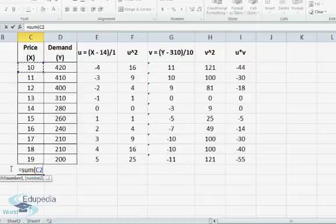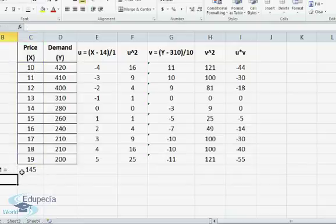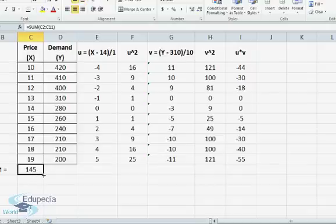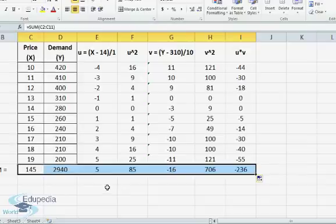u multiplied by v would be this multiplied by this group, and then for the whole column we have here. Yeah, so you have uv square. Next I need to find the sums of all of these, so let me do that here. Sum of x, of course we don't need x and y but it doesn't make any difference. So here you have the sums. Sum of u is 5, u square is 85, v is minus 16, v square is 706, and u multiplied by v is minus 236.